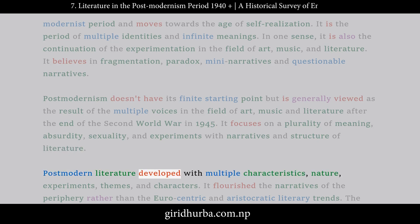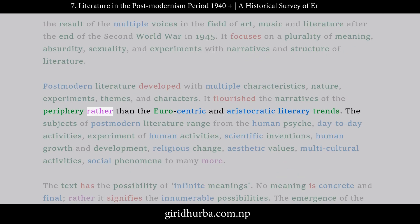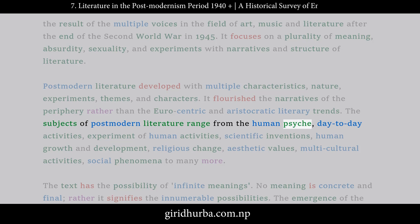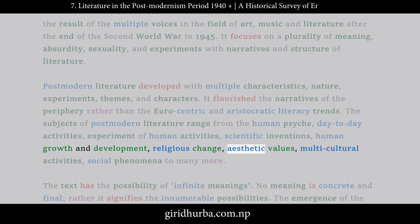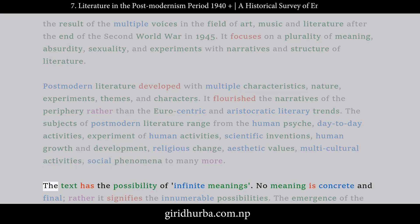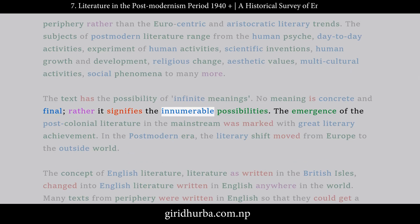Postmodern literature developed with multiple characteristics, nature, experiments, themes, and characters. It flourished the narratives of the periphery rather than the Eurocentric and aristocratic literary trends. The subjects of postmodern literature range from the human psyche, day-to-day activities, experiment of human activities, scientific inventions, human growth and development, religious change, aesthetic values, multicultural activities, and social phenomena. The text has the possibility of infinite meanings — no meaning is concrete and final; rather it signifies innumerable possibilities.